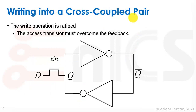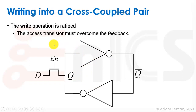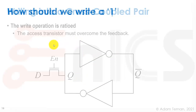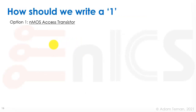How do we write into one of these cross-coupled pairs? The write operation is ratioed. We have our core bit cell with Q and Q-bar. If we add an NMOS switch on one side with an enable signal, we can drive our input D onto Q and change its state from 0 to 1 or 1 to 0.